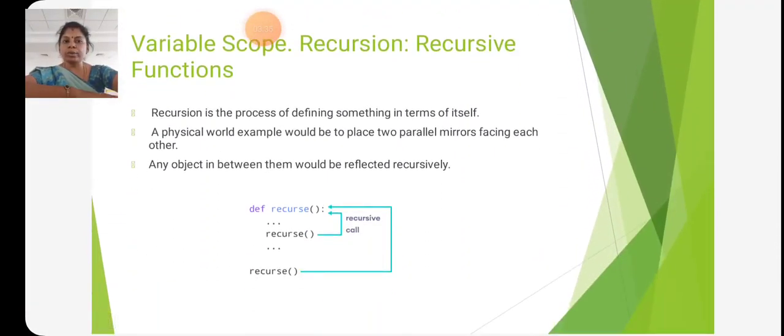Then variable scope, recursion and recursion function. Recursion is the process of defining something in terms of itself. Any object in between them would be affected recursively.